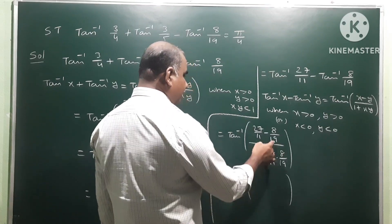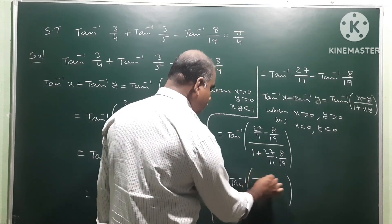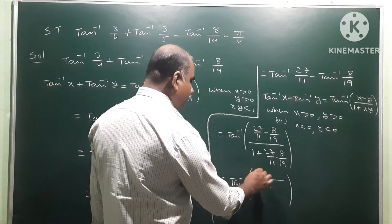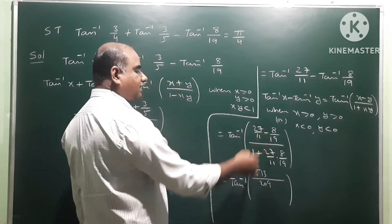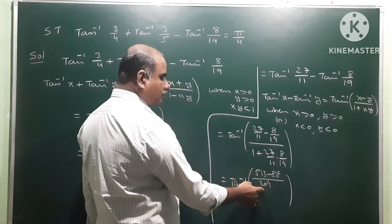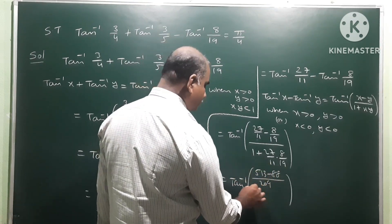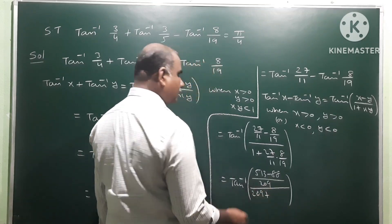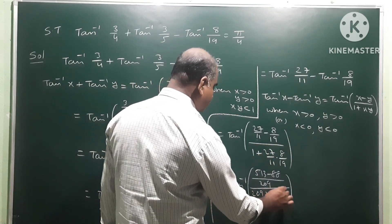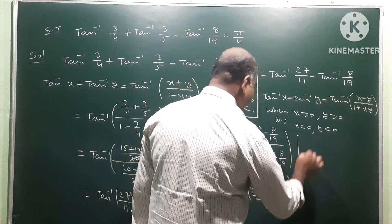That is equal to tan inverse... multiply by 209. So 27 into 8 is 216. Multiply by 209 in the numerator: 513 minus 88. In the denominator: 209 plus 216. So we get tan inverse